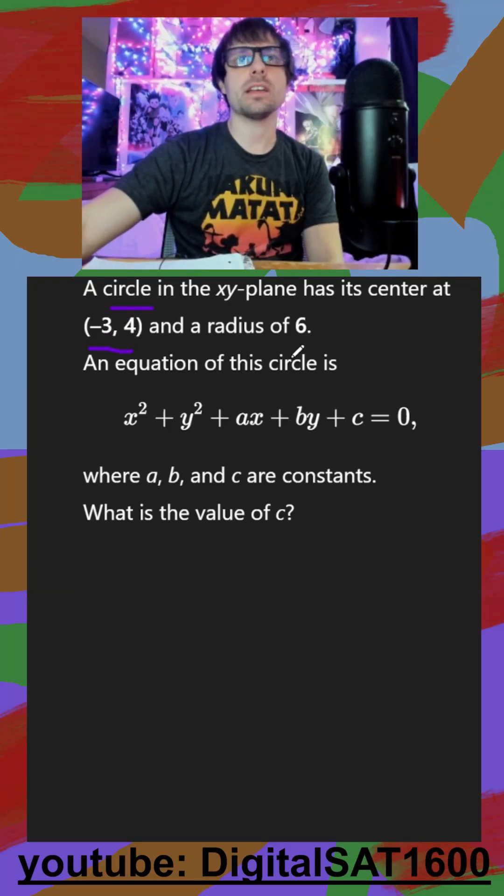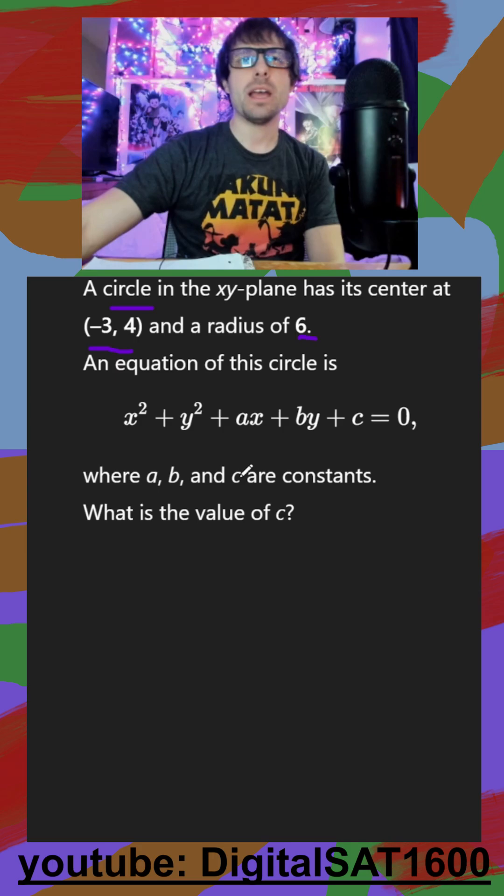I see a circle with a center and a radius, and they give us an expanded form of a circle. And no matter what they want, the a, the b, or the c,